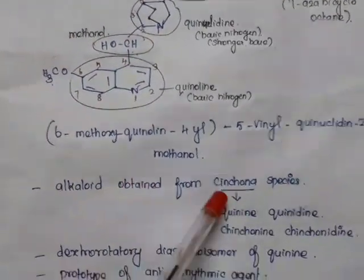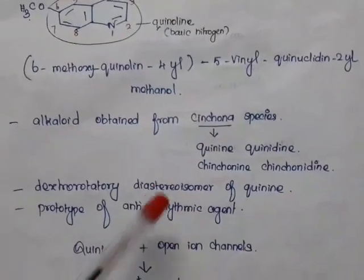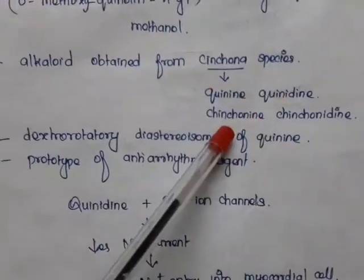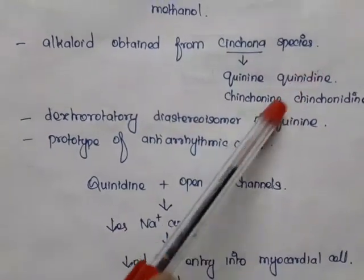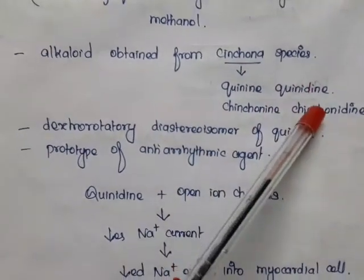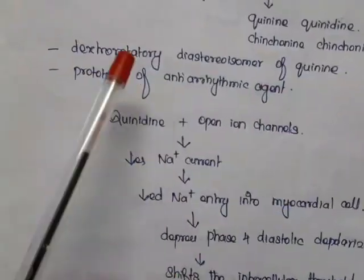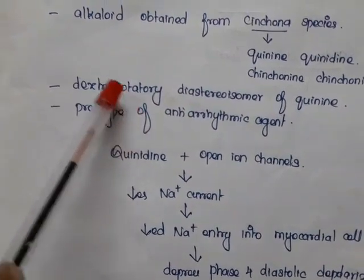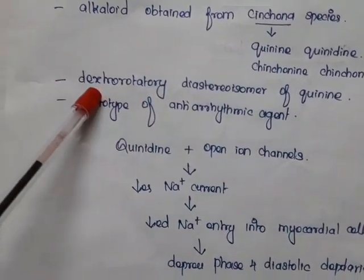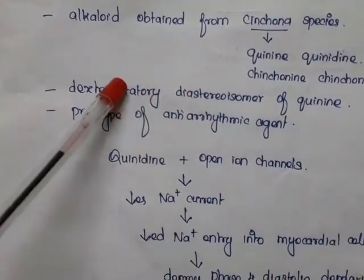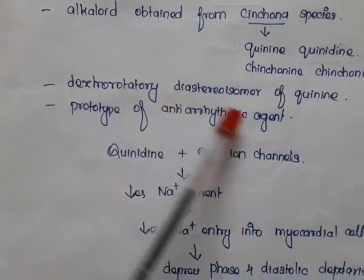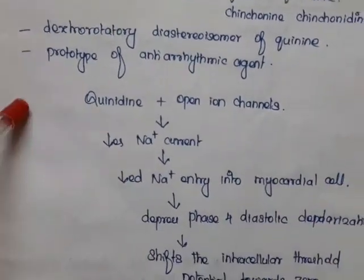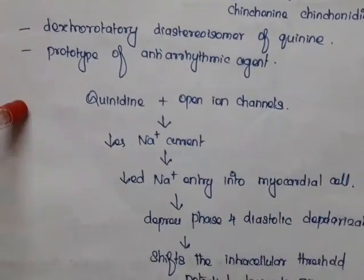Quinidine is a cinchona alkaloid. From cinchona, four alkaloids are obtained: quinine, quinidine, cinchonine, and cinchonidine — quinine and quinidine are isomers, and cinchonine and cinchonidine are isomers. Quinidine is the dextrorotatory diastereoisomer of quinine, and it is the prototype anti-arrhythmic agent of this class.